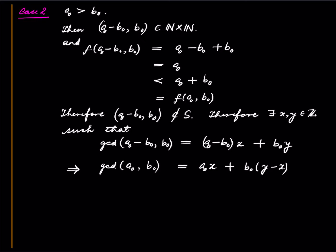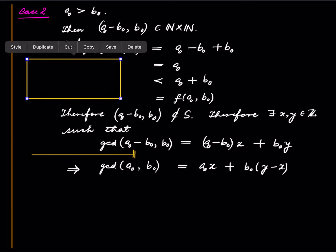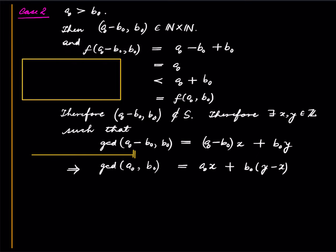The reason for this equality, let me draw a box: A0 equals B0 times one plus A0 minus B0.